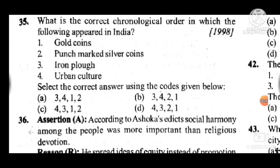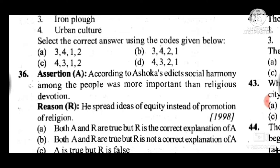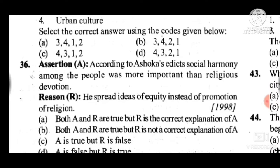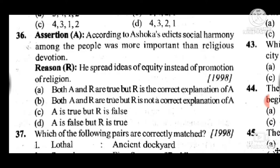Question 35: Which is the correct chronological order in which the following appeared in India? Answer is D — urban culture first, then iron plough, then punch-marked silver coins, then gold coins. Question 36: According to Ashoka's edict, social harmony among the people was more important than religious devotion. The answer is A — both A and R are true, and R is the correct explanation of A. This question was repeated in the 1998 UPSC prelims.